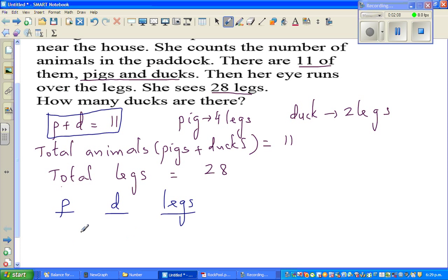So let us start with say one pig. If you have one pig, you will have how many legs? So how many ducks you should have? 10 ducks, because 1 plus 10 is 11. And here legs would be...